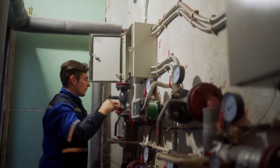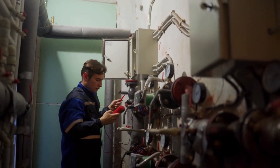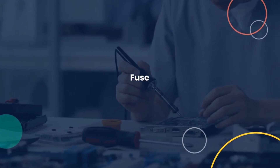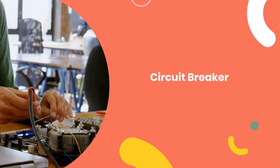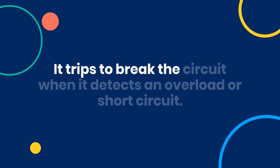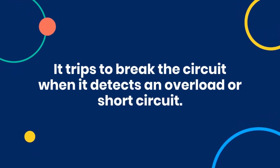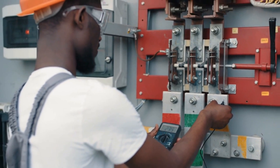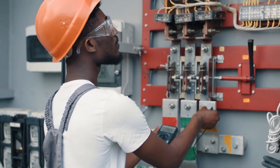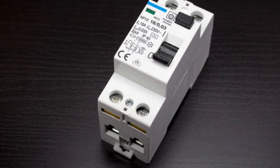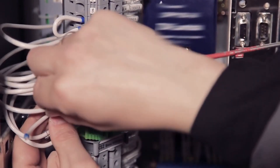Question one: What is the difference between a fuse and a circuit breaker? A fuse is a one-time use protection device that melts when excess current flows through it, breaking the circuit. A circuit breaker, on the other hand, can be reset and used multiple times — it trips to break the circuit when it detects an overload or short circuit. Understanding this difference is crucial for choosing the right protection for electrical systems.